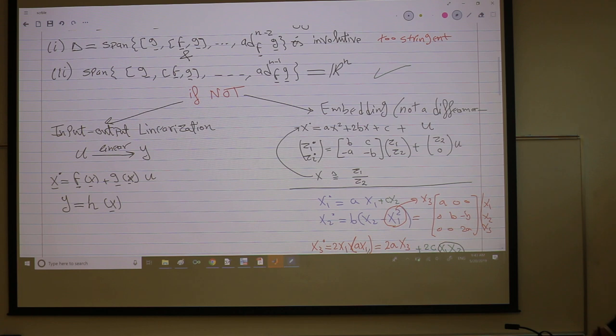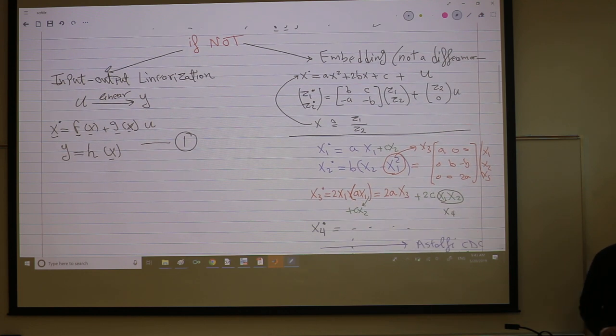So I have my system, which is x dot equals f of x plus g of x times u. It's still a scalar system, and now we are talking about an output function. This is a scalar function. Maybe one of the states, or whatever you can measure, a combination of the states. I'm going to put this as system one because we're going to consider it throughout the lecture.